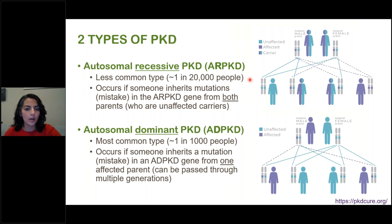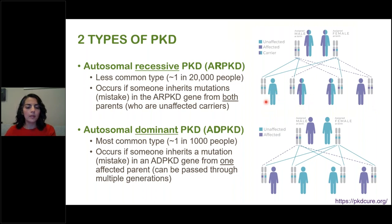AR PKD is the less common type, about 1 in 20,000 people. As a recessive disease, a person will only have the disease if they inherit a mutation in the gene from both parents. In this picture, the affected gene with a mutation is depicted in purple and the normal gene in teal. In contrast, autosomal dominant PKD is much more common — about one in a thousand people — and is inherited generally from one generation to the next, because you only need one copy of the mutated gene to have the disease.